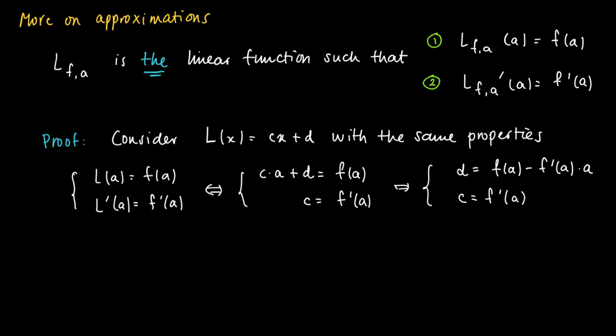More specifically, we can now write L(x) with this found constant as follows: L of x equals c and d equals F prime A, so we get F prime A times x plus d, but d equals F of A minus F prime A times A.